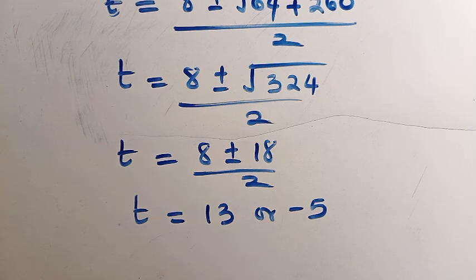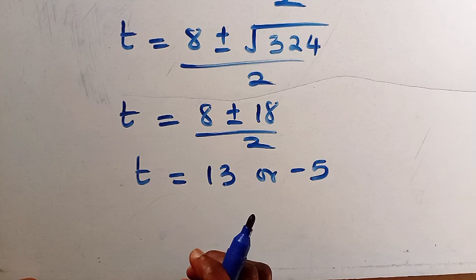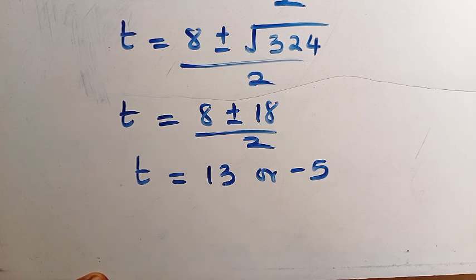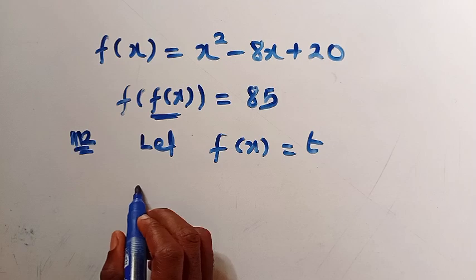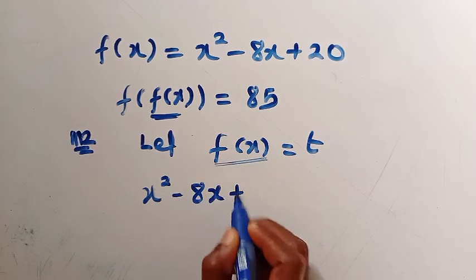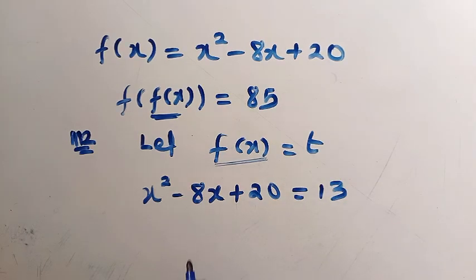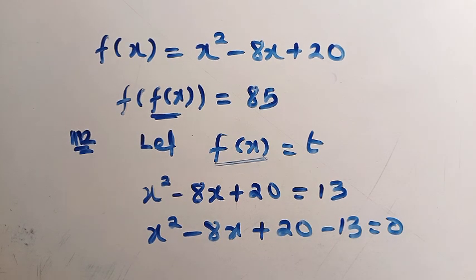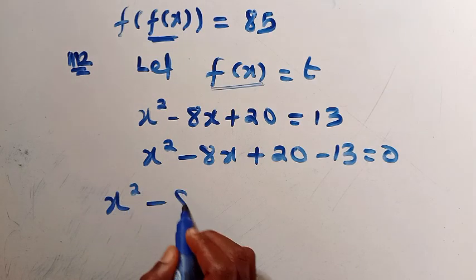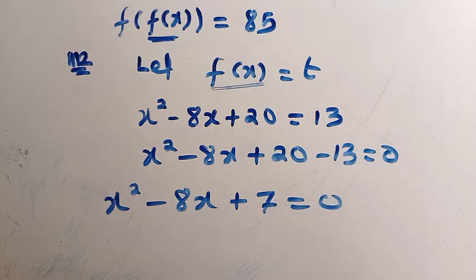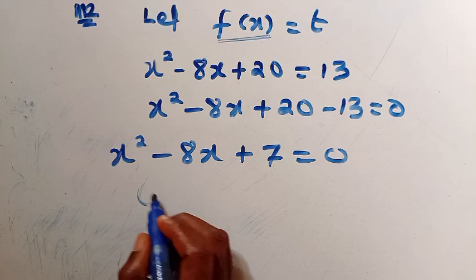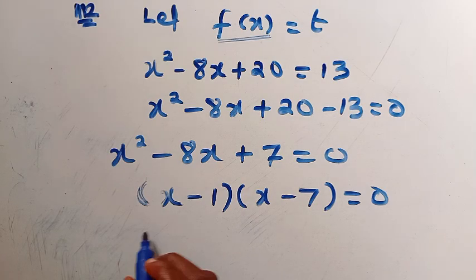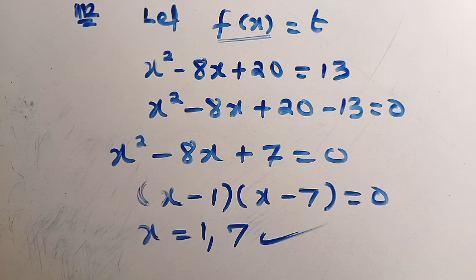Now recalling that f of x equals t, we substitute back. For Case 1, f of x equals 13: x squared minus 8x plus 20 equals 13, which gives x squared minus 8x plus 7 equals 0. This is factorable as (x minus 1)(x minus 7) equals 0, giving x equals 1 or x equals 7, the same result as Method 1.